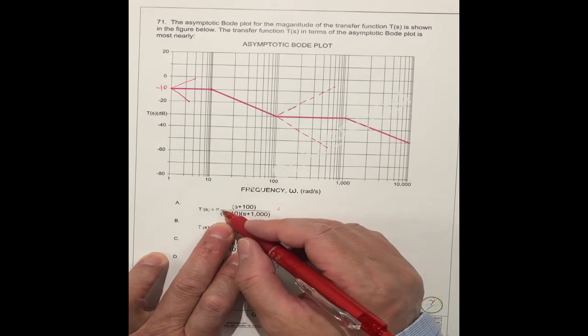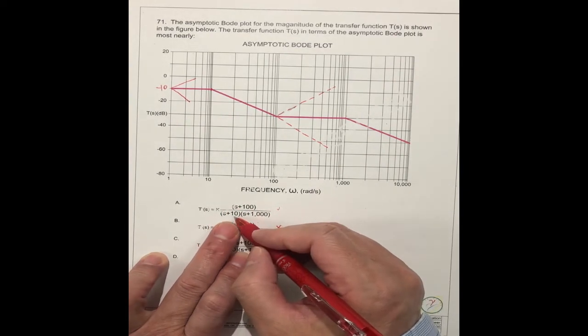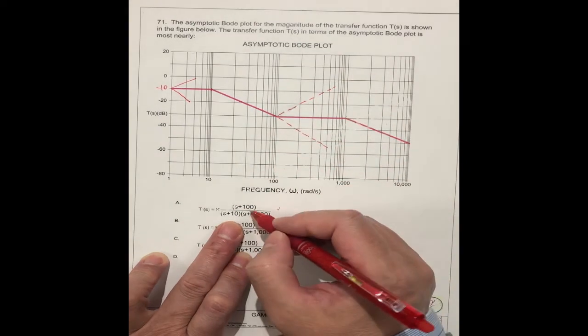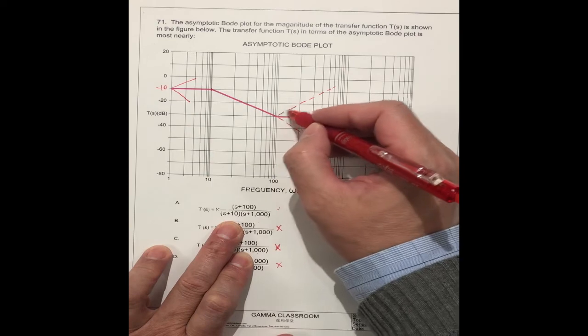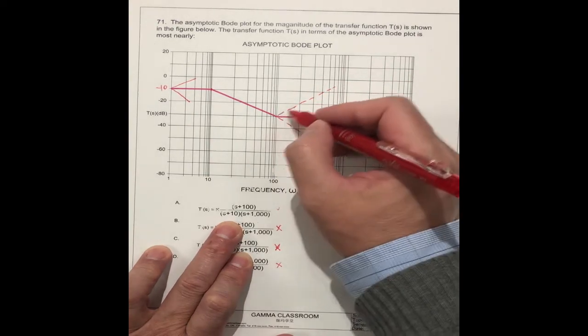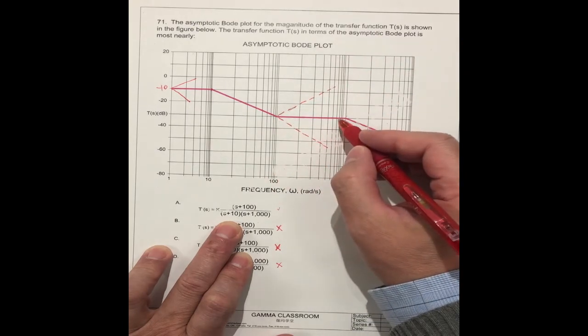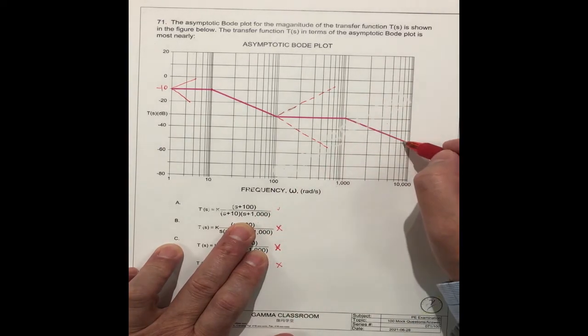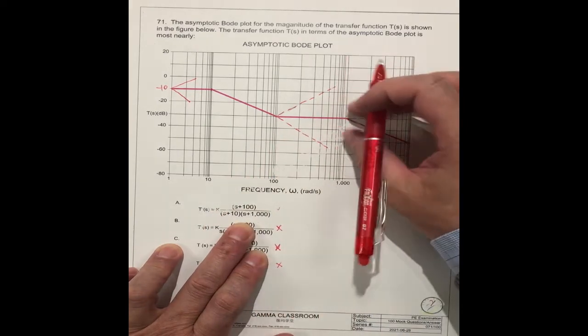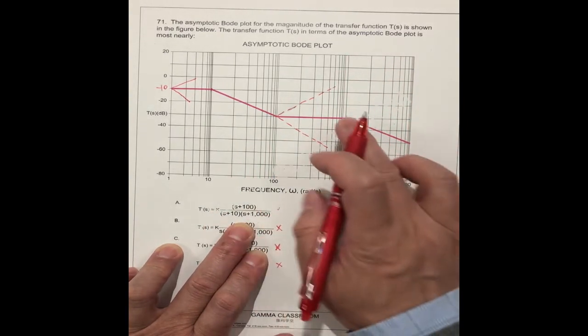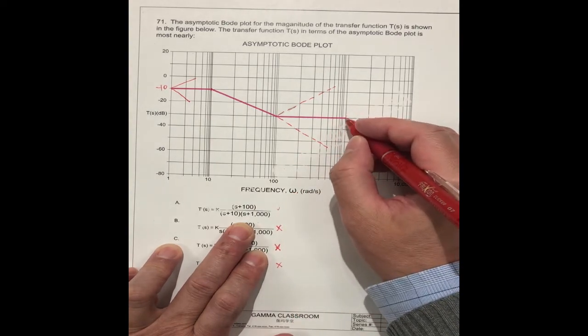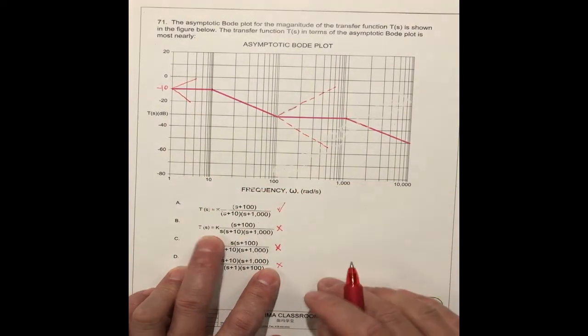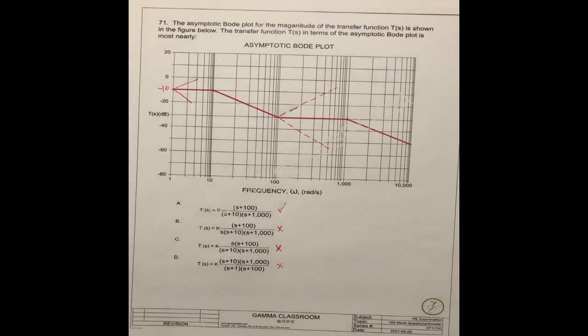So we're back to check the first one. You see, only when s equals 10, they have the pole going down. And at 100, they have the zero going up. Because this continues to go down and this goes up, put together, they're flat. And at the 1,000 point, there's another one going down. Because these two are cancelled, still flat, and they have another pole at the 1,000 point going down. So the number A should be correct. The correct answer should be number A.